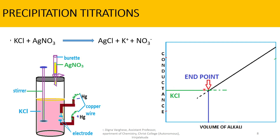As silver nitrate is added from the burette, it dissociates as Ag+ and NO3-. Here, the Cl- and NO3- have the same mobility, so the conductance is almost constant. The potassium chloride conductance remains practically constant throughout this portion of the titration.